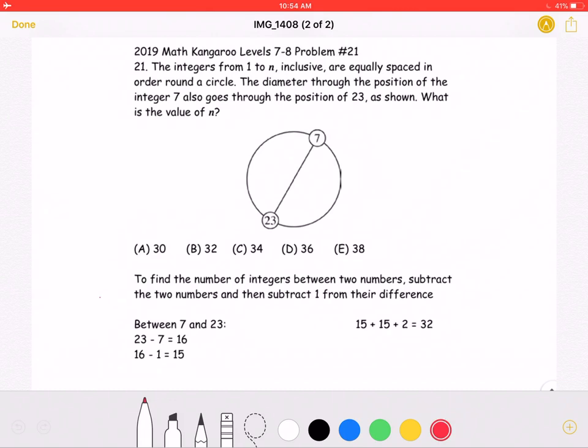Let's start by noting that in order to find the number of integers between two numbers, subtract the two numbers and then subtract 1 from their difference.